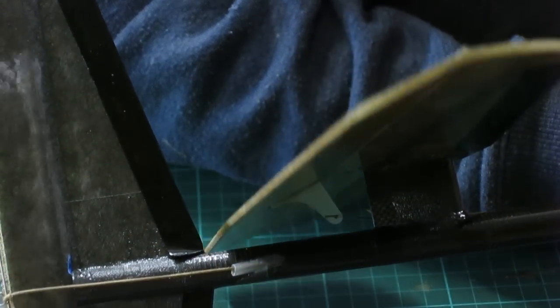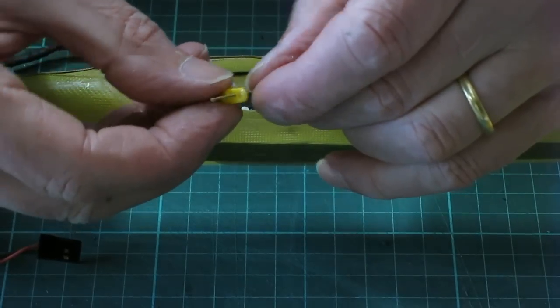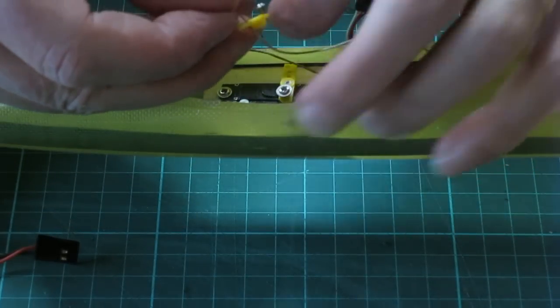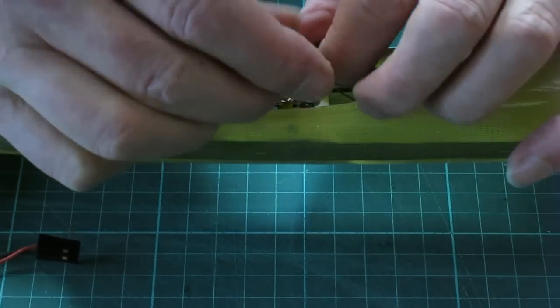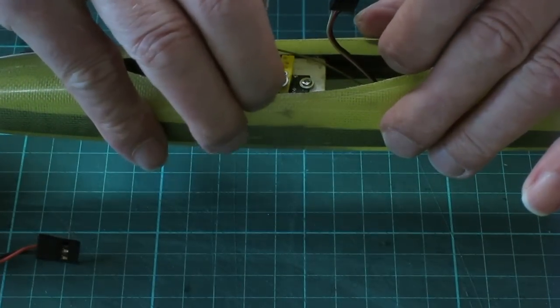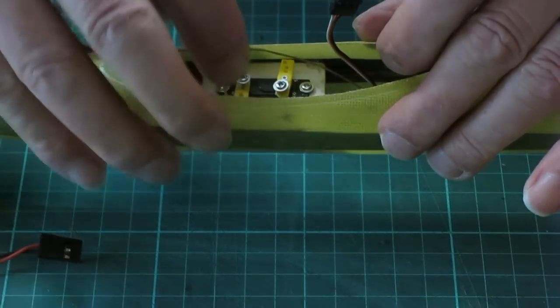So I thread the line through two holes drilled in the servo arm. Here I'm threading it through the inner hole. But later on I changed it to the outer hole so that I could get enough control surface movement.